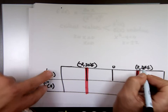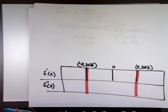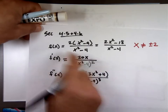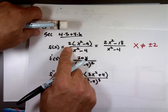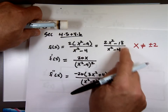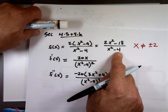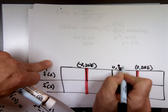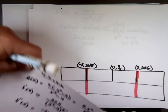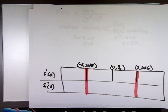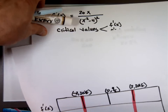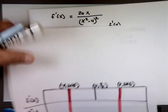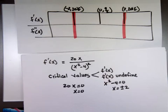What about when x is zero? When x is zero, that's negative 18 over negative four, which is nine over two — four and a half. So the point is at zero, four and a half. Let's finish the first derivative while we're looking at it.